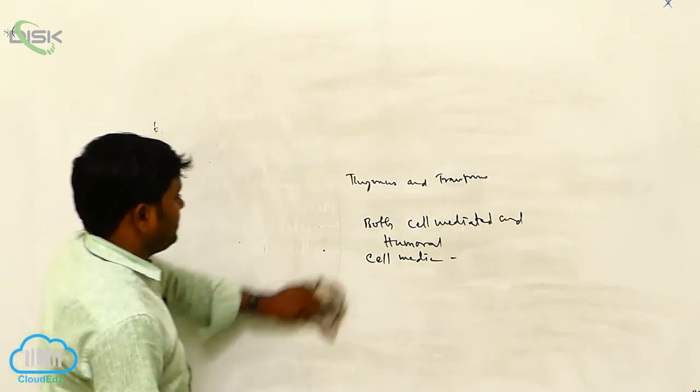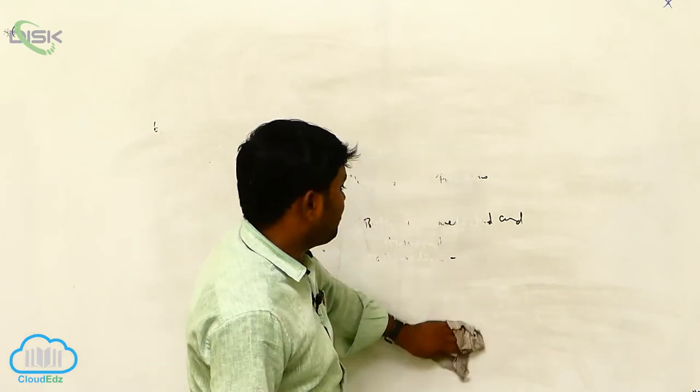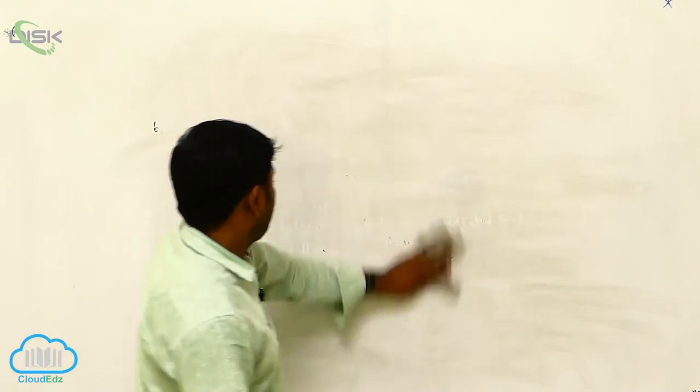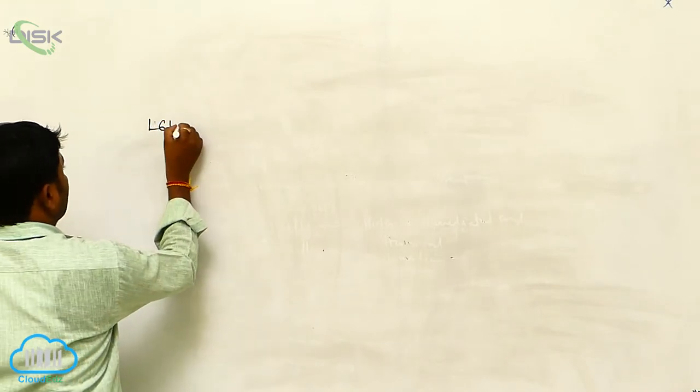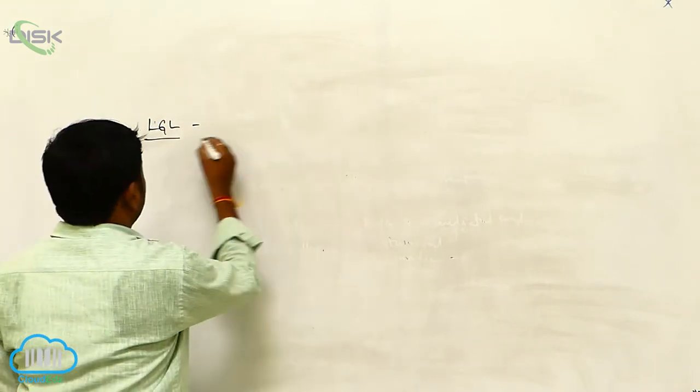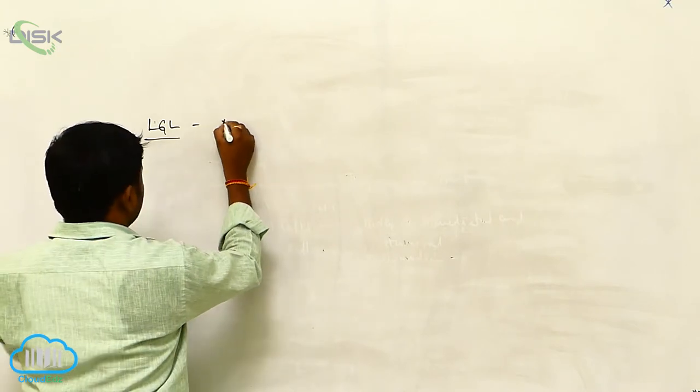Large granular lymphocytes (LGL) are also called natural killer cells.